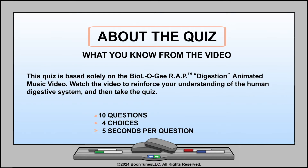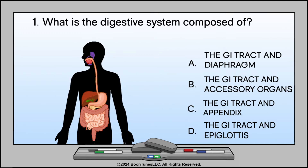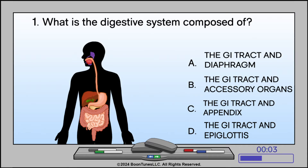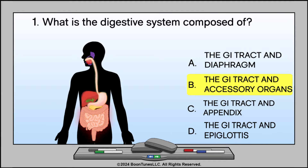What is the digestive system composed of? A. The GI tract and diaphragm. B. The GI tract and accessory organs. C. The GI tract and appendix. D. The GI tract and epiglottis. The answer is B: The GI tract and accessory organs.